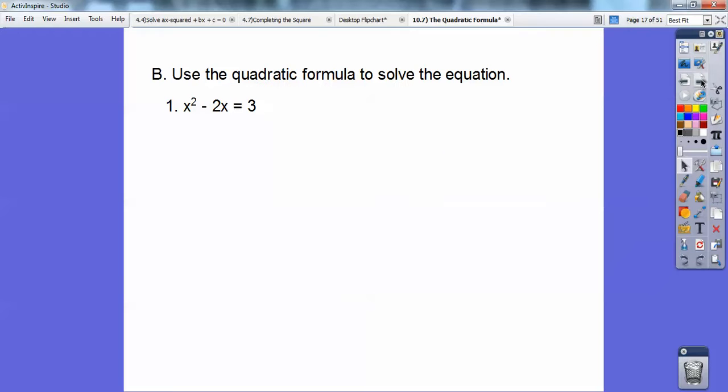Okay, so use the quadratic formula to solve the equation. So here's this one right here. It has to equal zero, so you've got to subtract three from both sides. And then notice a is one, b is negative two, c is negative three.